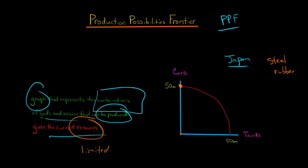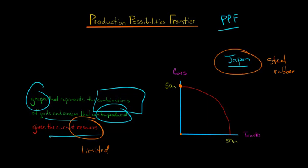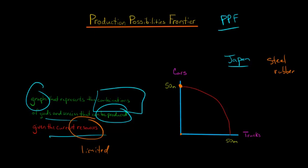If Japan just strictly focused on making cars, the max that they could produce is 50 million cars. Japan doesn't have to just produce all cars or all trucks — they can have different combinations. All the points along this curve are different combinations of cars and trucks that Japan could produce.